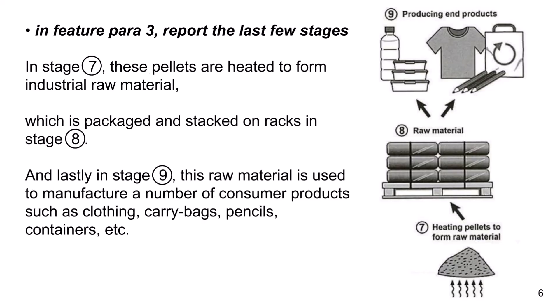In Feature Para 3, report the last few stages. In stage 7, these pellets are heated to form industrial raw materials, which are packed and stacked in racks in stage 8. And lastly in stage 9, this raw material is used to manufacture a number of consumer products, such as clothing, carry bags, pencils, containers, etc.